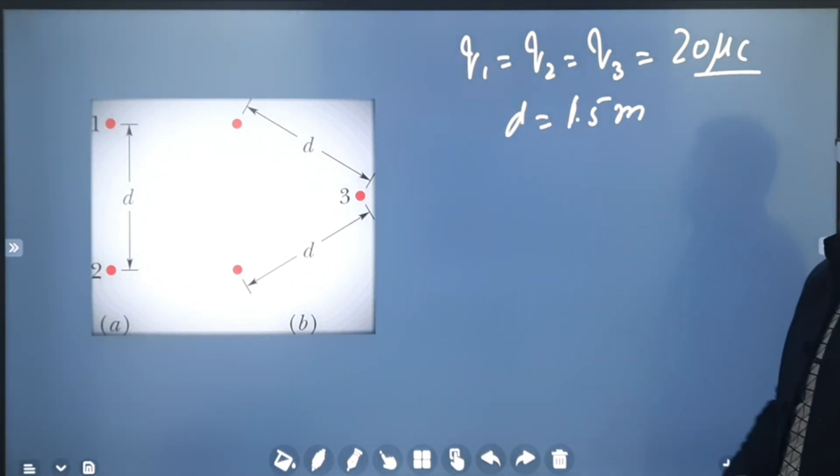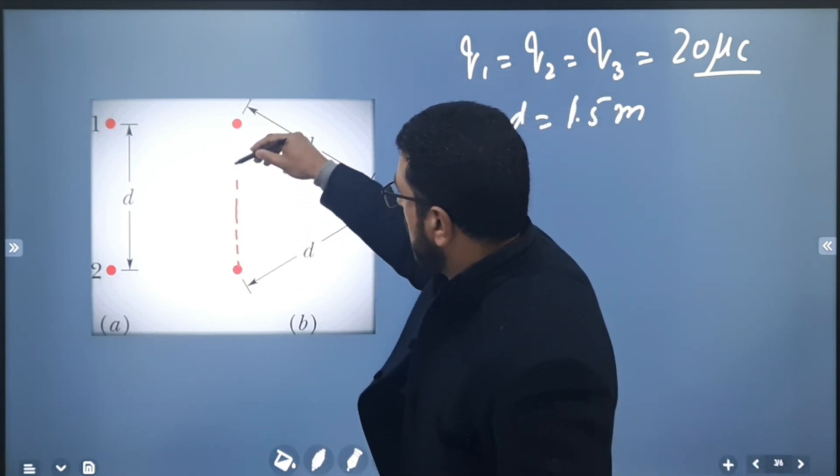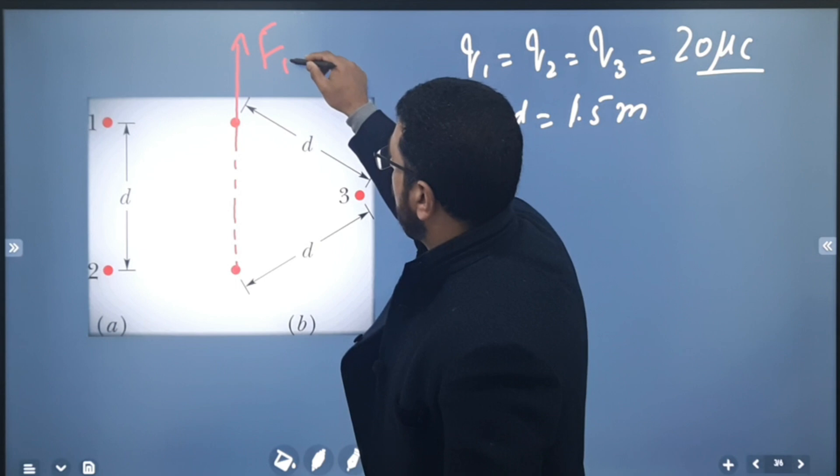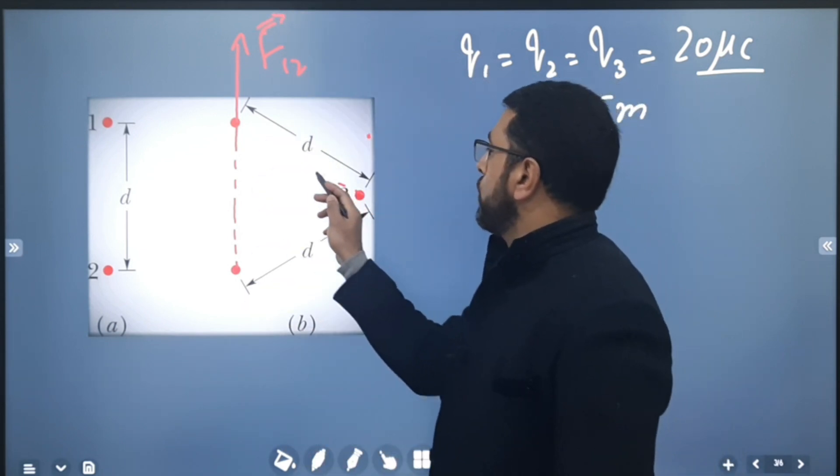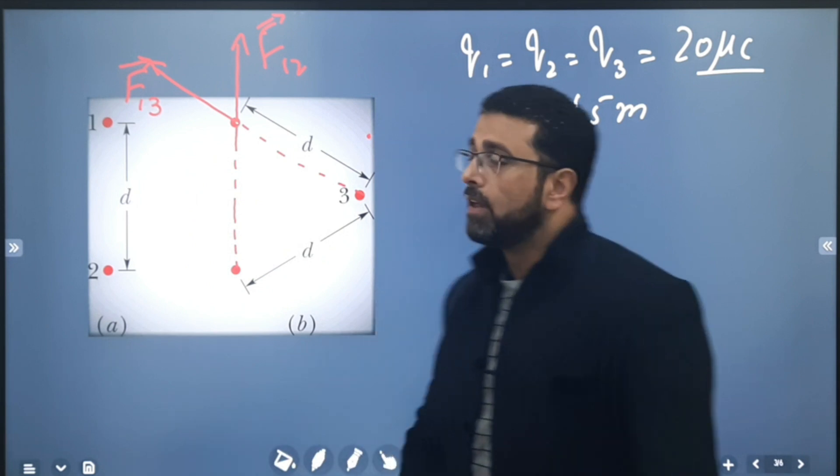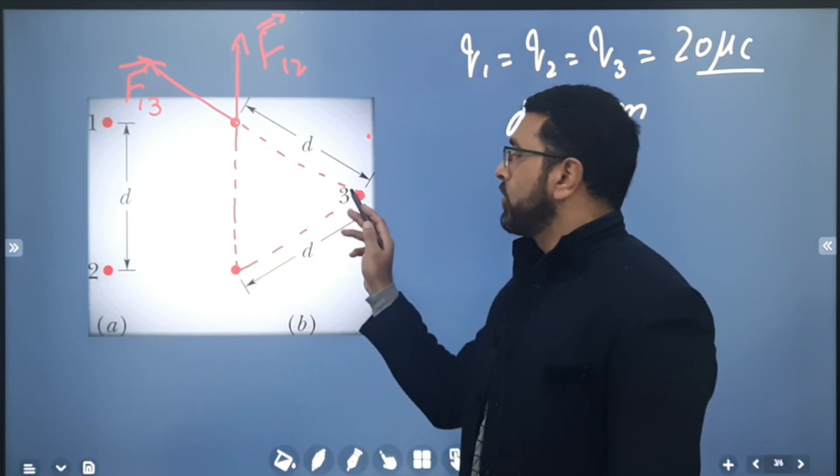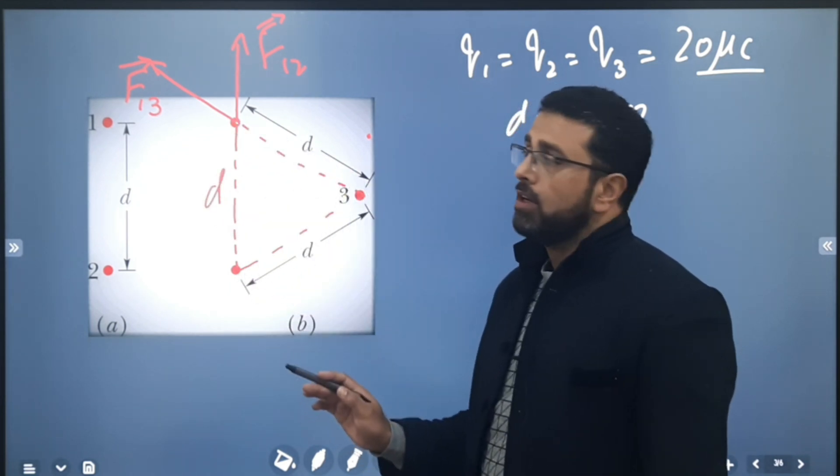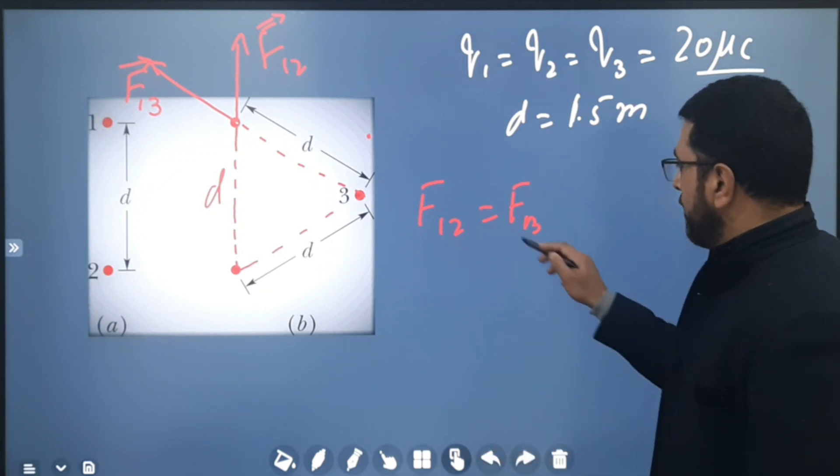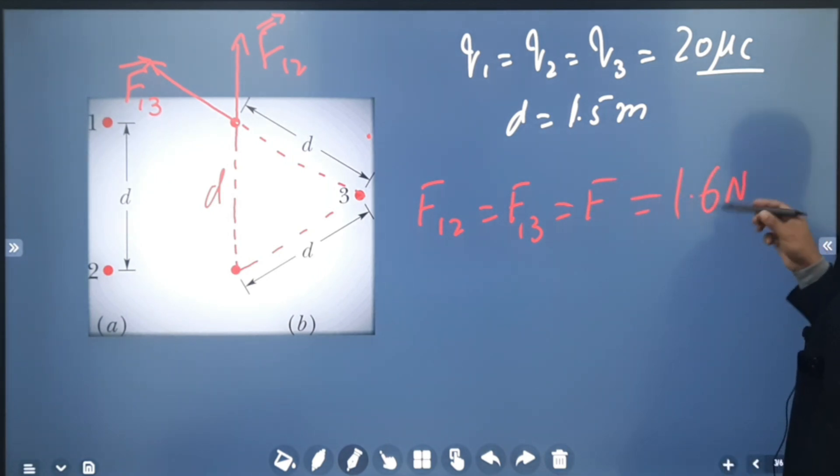So all three charges are the same, 20 microcoulombs, distances are same, so force magnitudes will be same. Force on 1 due to 2 will be in this direction, F₁₂. Force on 1 due to 3 in this direction, F₁₃. Now the magnitudes of these two forces are same because charge values are same and distances are same. So F₁₂ is equal to F₁₃, I'll just call them F. This we just found is 1.6 newtons in the previous part.